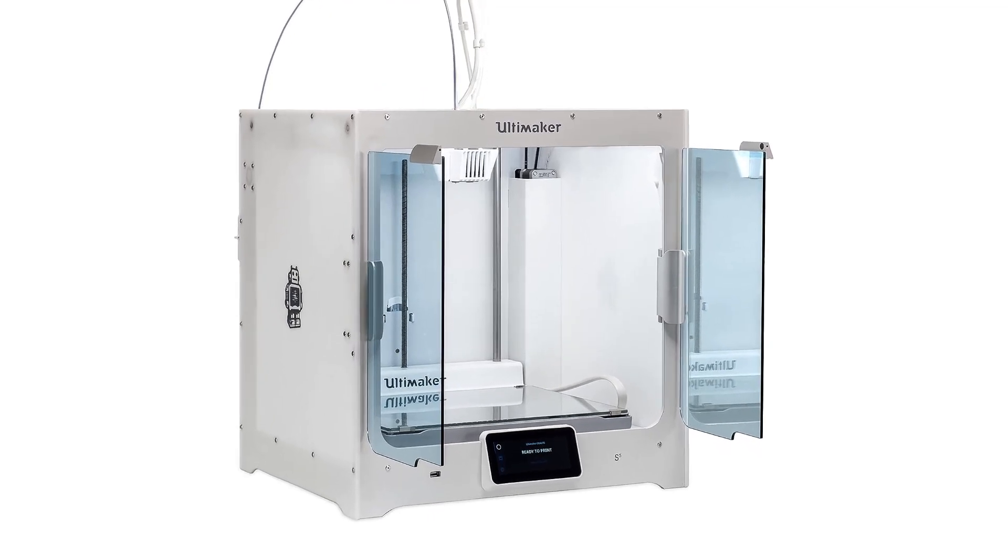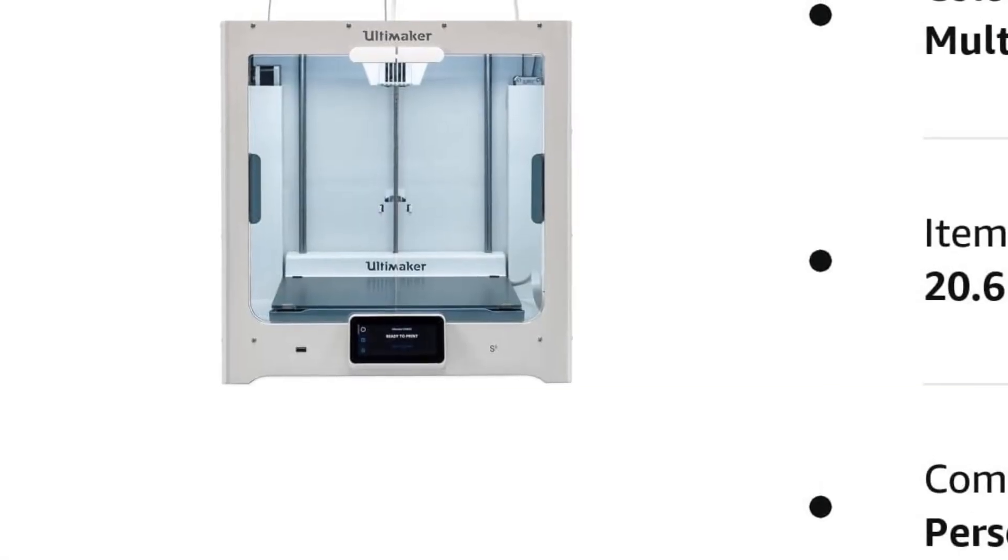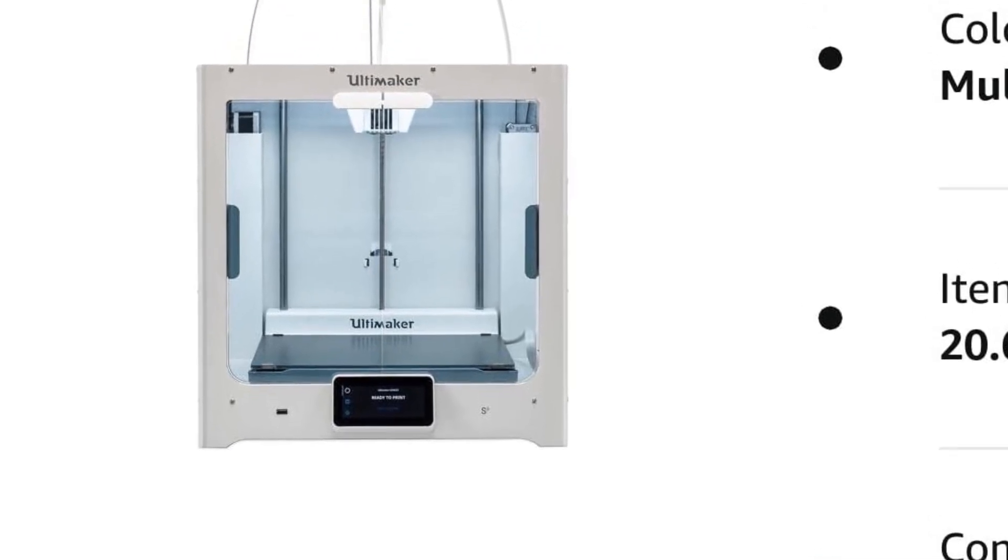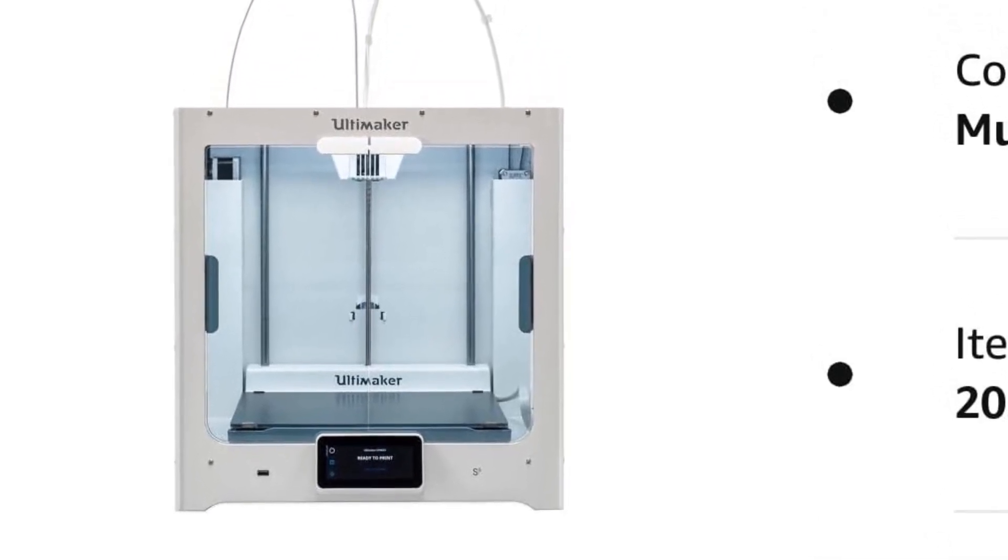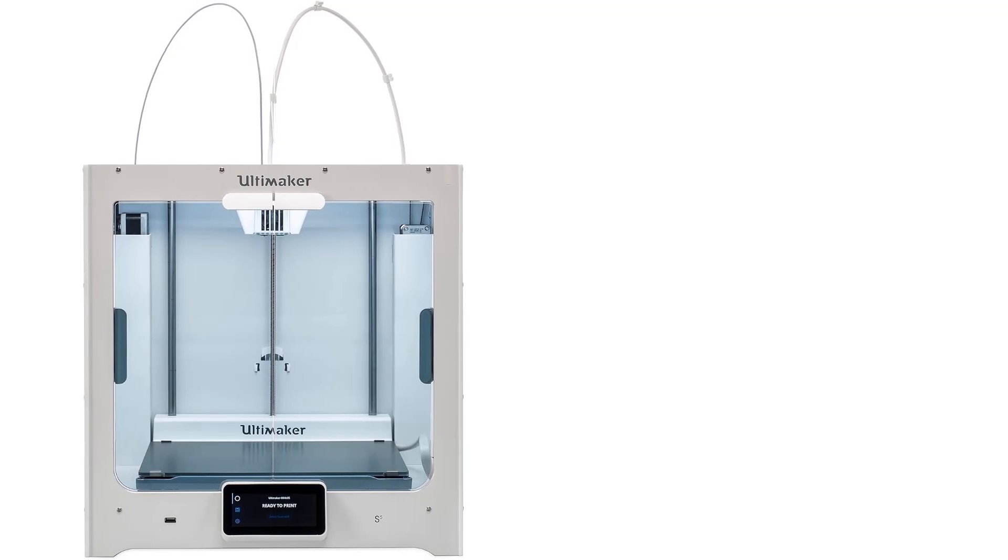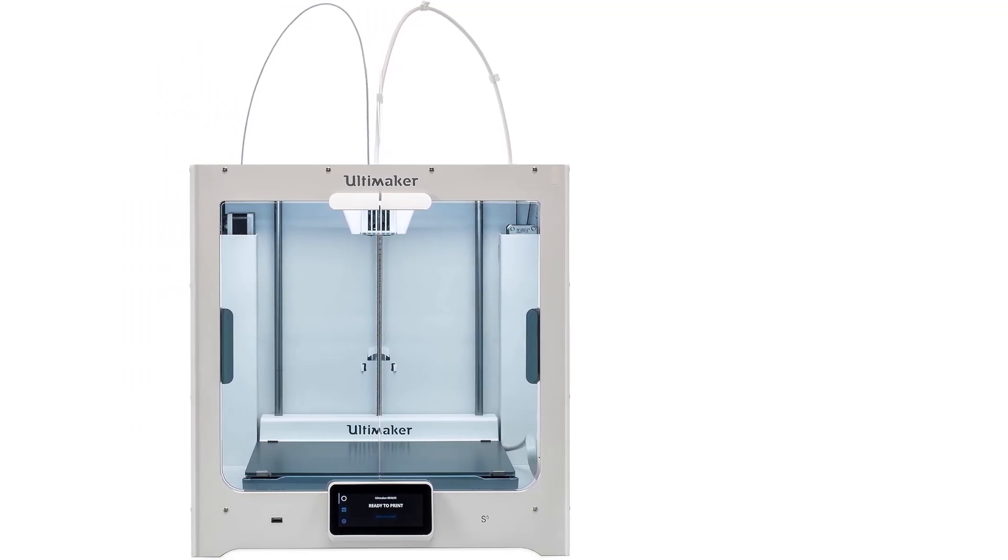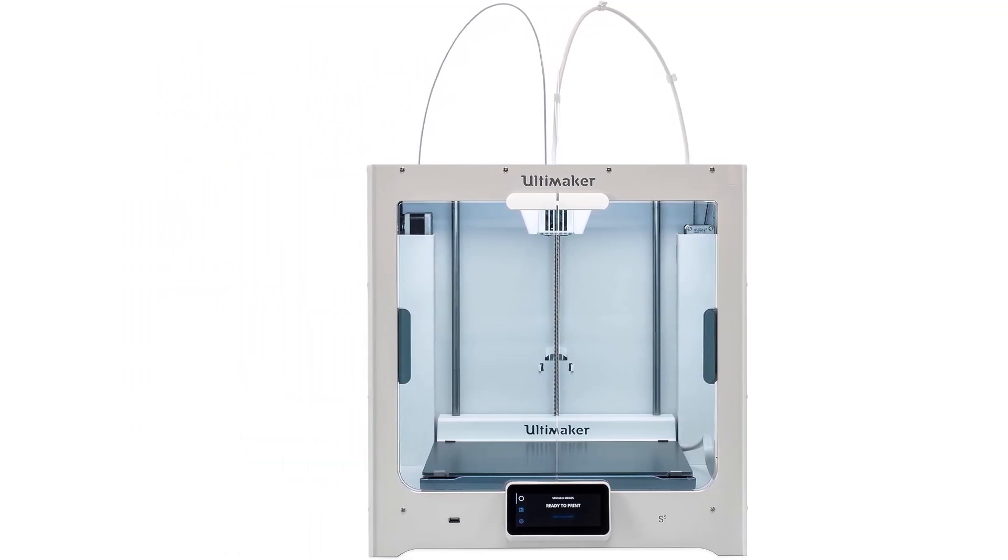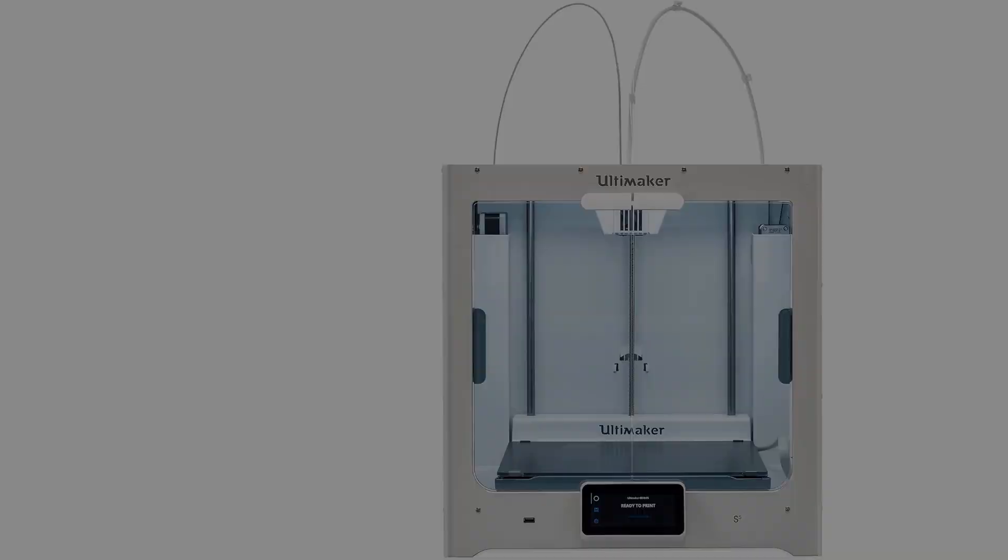Moreover, it is easy to set up and operate. The S5 can connect to a PC via Wi-Fi or Ethernet, and you can print objects from a USB thumb drive inserted into its forward-facing port. It uses the familiar Cura open-source printing software that Ultimaker now manages.